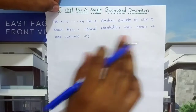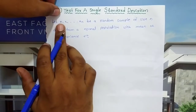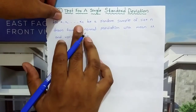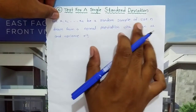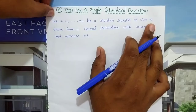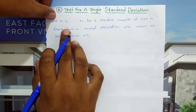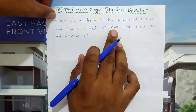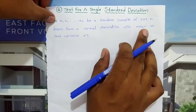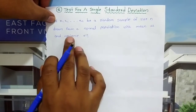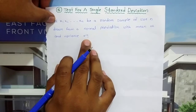Let x1, x2 up to xn be a random sample of size n drawn from a normal population with mean mu and variance sigma square.